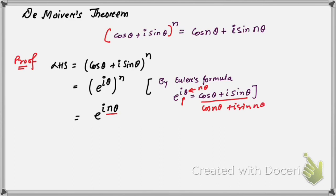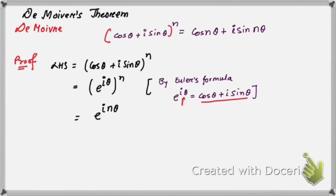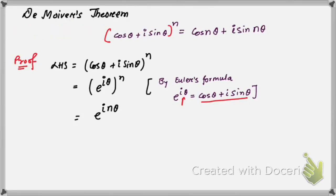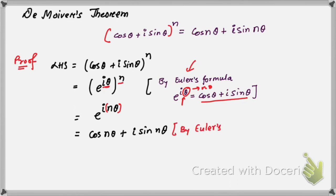What we need to do is replace theta by n theta in Euler's formula. Sorry for the spelling mistake — it should be De Moivre's theorem. Just replace 'e' by 'r' and 'r' by 'a'. So again, by using Euler's formula, we replace this theta by n theta. Because n times i theta gives i n theta, we treat i n theta as the new theta and apply Euler's formula again, giving us cosine n theta plus i sine n theta.